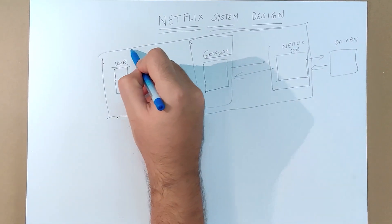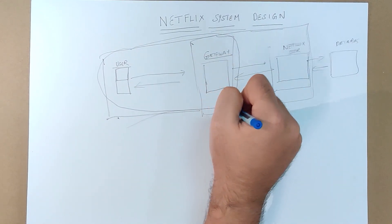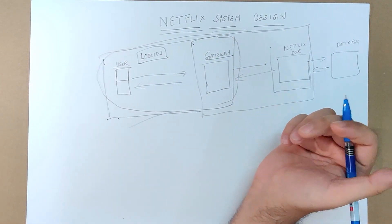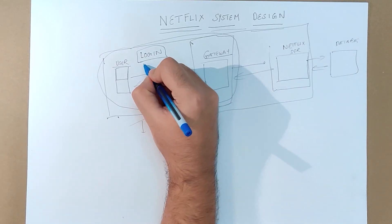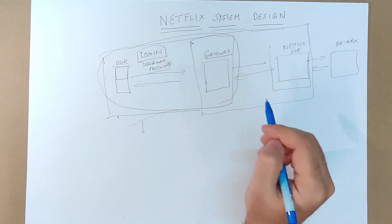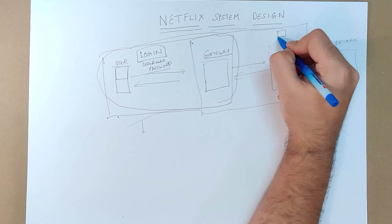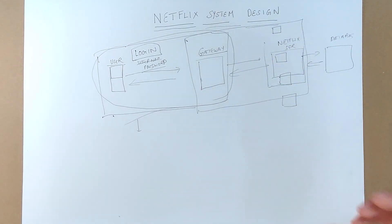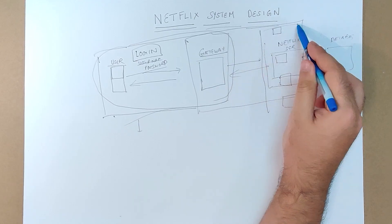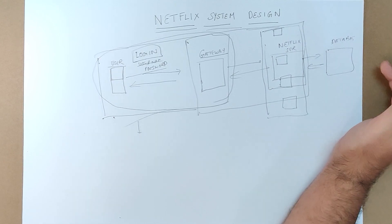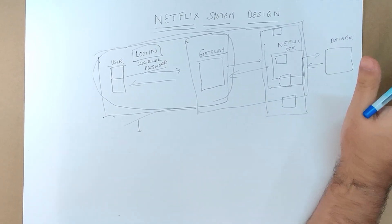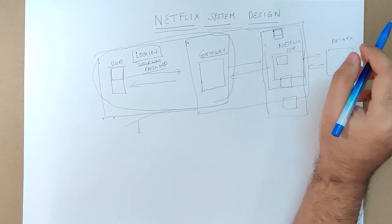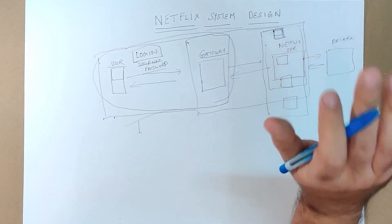In this first video, we're going to talk about the user-to-gateway part — what happens when you first log in. Let's consider Netflix architecture as a combination of a lot of microservices. We'll go into detail on each microservice in upcoming videos. A microservice is just a simple small service doing only one particular thing — not a monolith. A microservice is just a service doing some function.